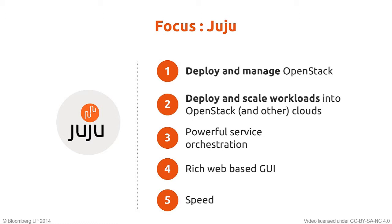Juju has the notion of machine providers — for EC2, Amazon, Azure, HP Cloud, everybody on that list. But also LXC locally, so you can take the same charms, stand something up in a container to try it out, then move it to your OpenStack private cloud for another level of testing, and when you're ready to spend money on it, without really changing anything, put it on Amazon, Azure, or HP Cloud.